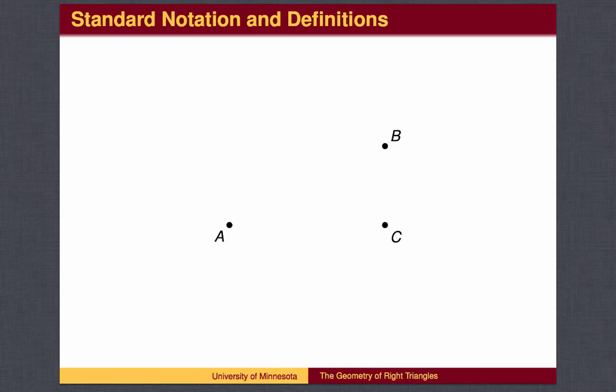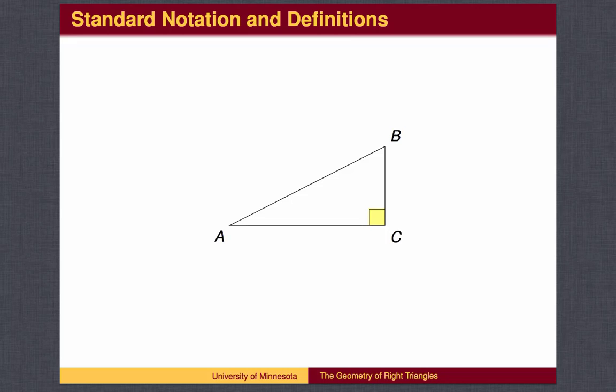Let's begin with points A, B, and C, which form a right triangle with the right angle at C. We typically refer to the angles of the triangle by the point which is at the vertex of the angle. For instance, angle C is the right angle. We typically label the sides of the triangle with a lowercase letter corresponding to the angle which is across from it.